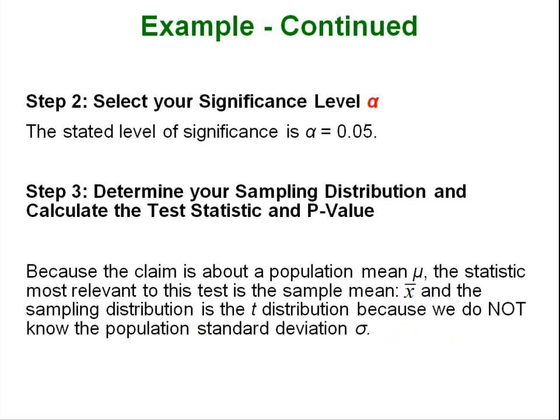Step 2, select the significance level. Well, it was already stated that our significance level was going to be 0.05. Step 3, we want to determine our sampling distribution and then calculate our test statistic and p-value. Well, because we don't know the population standard deviation we have to use a t distribution. So that's our sampling distribution.